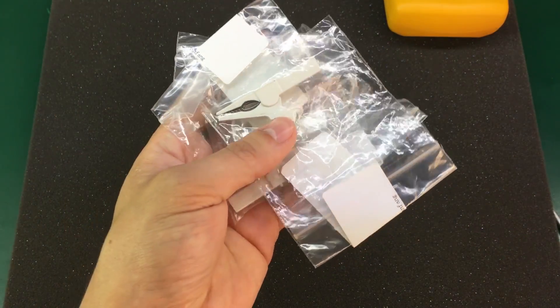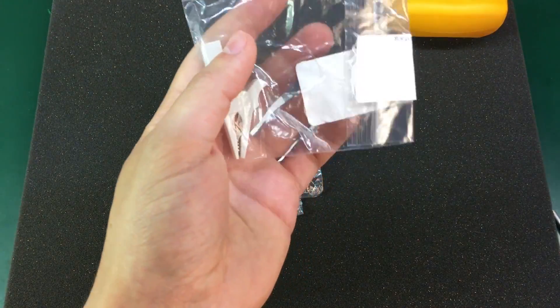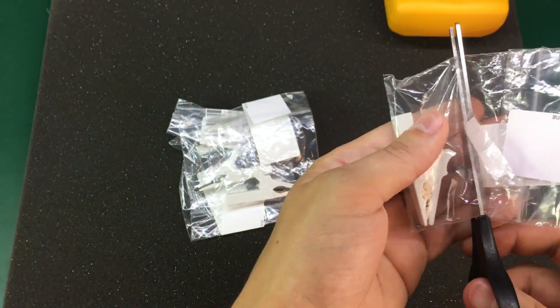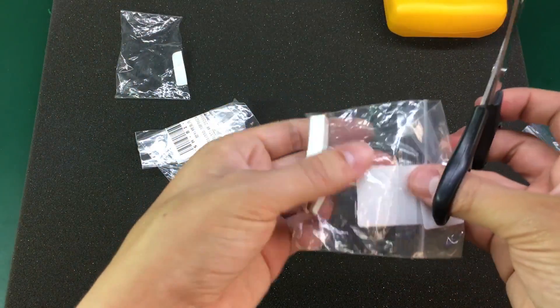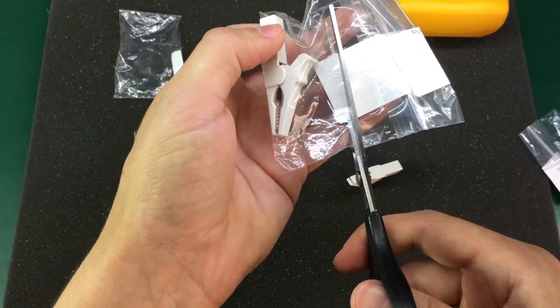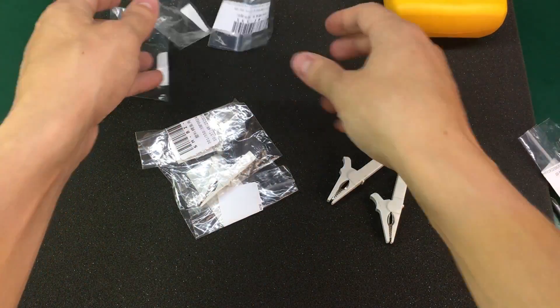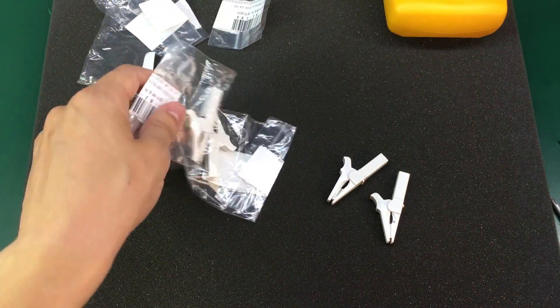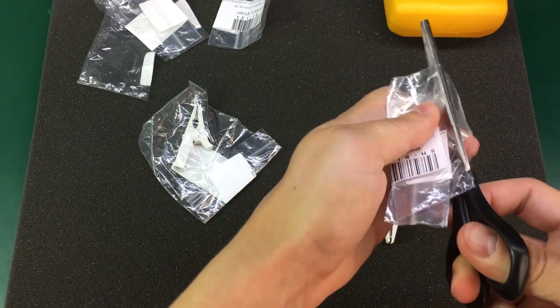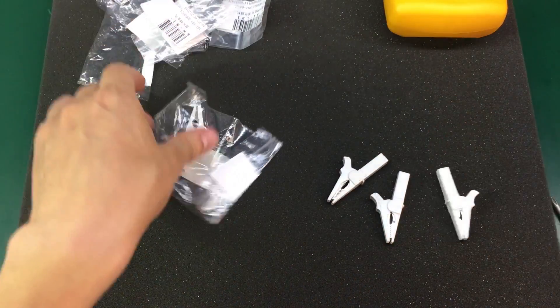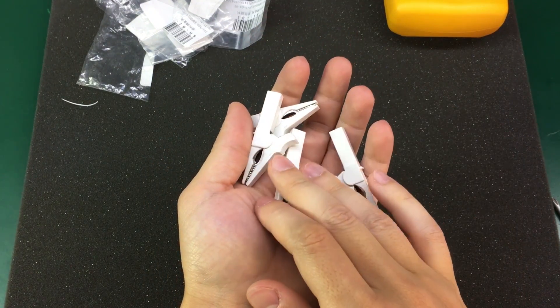Next I ordered another 4 of these 55mm alligator clips. Which have the 4mm banana inputs on their back. Although the eBay listing clearly states color will be random. It's a bit strange that in my case out of 4 pieces they were all randomly white.